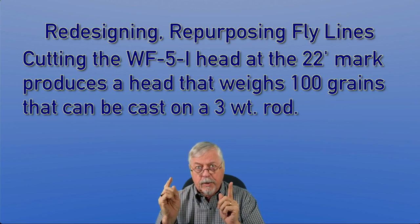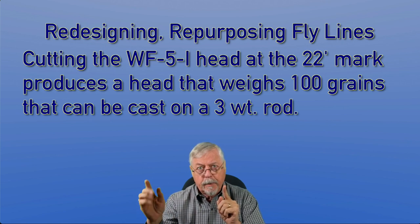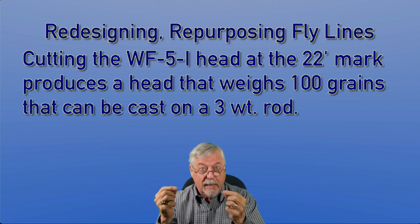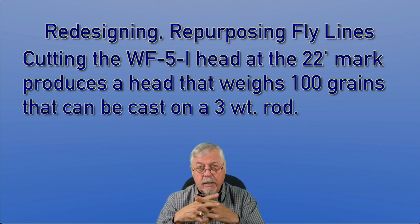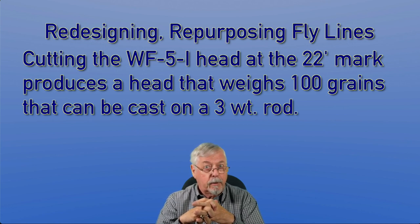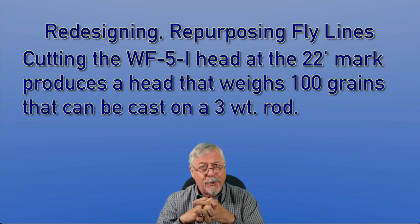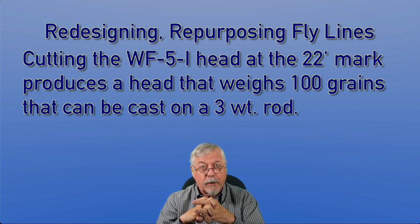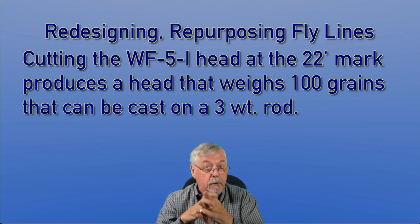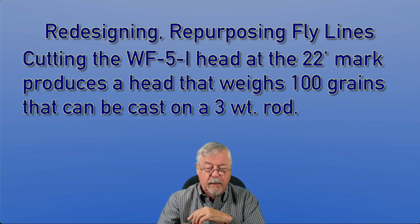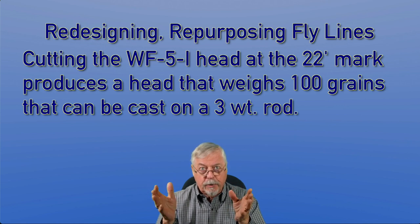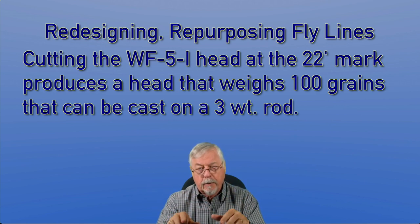So if we measure from the front tip of the fly line back 22 feet and cut it there, we end up with a head that is 100 grains. That's what we're after — turning this into a three-weight line. If you had a scale, weigh it and it'd be 100 grains. As for accuracy: I've done this numerous times and I'm accurate within one to two percent. You can't feel one or two percent when you're casting — 98 or 102 grains, it doesn't matter. When I've done these calculations and actually cut the line, I've been within a grain or two of the actual weight. I've done it dozens and dozens of times. So I've produced a head that's 22 feet long, 100 grains, that will cast beautifully on a three-weight rod.